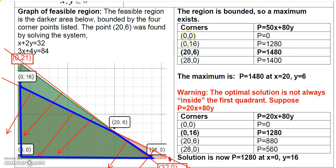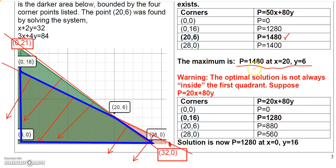With all four corner points, we plug each into the objective function. Plugging in (0, 0) gives 0; (0, 16) gives 1280; the intersection point (20, 6) gives 1480; and (28, 0) gives 1400. So the optimal solution is a maximum of 1480, when x = 20 and y = 6. Note the solution is not always inside the quadrant — it could be on the axes.